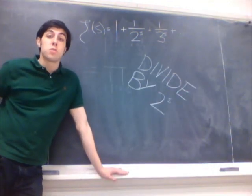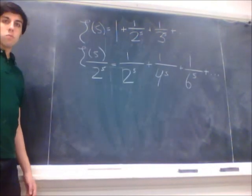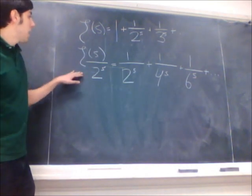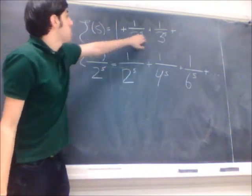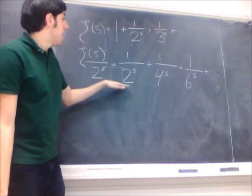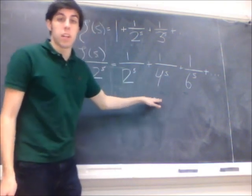Now we're going to divide both sides by 2 to the s. So here I've just divided this by 2 to the s, and we see that if we divide each of these terms by 2 to the s, we get all these denominators of even integers.